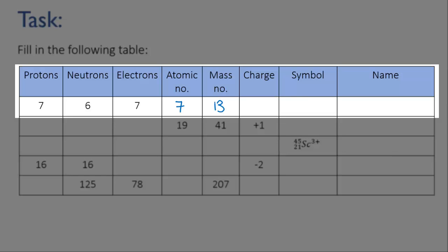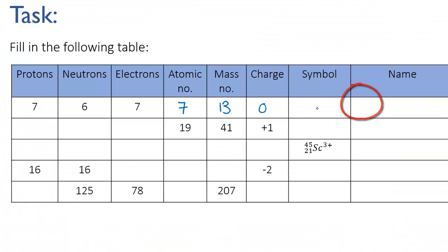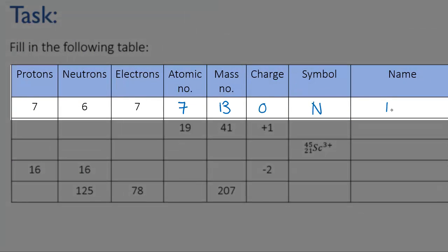The charge here is the positive charge from the protons plus the negative charge from the electrons, which is going to be 7 minus 7, which is 0. So this is a neutral atom. Now we need to look up the name and symbol. We know that the atomic number is 7. So we go to our periodic table and we look for atomic number 7 and we find that it's nitrogen. So the symbol is N. The name is nitrogen.